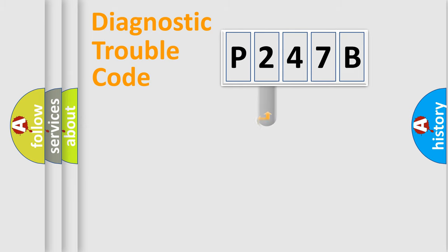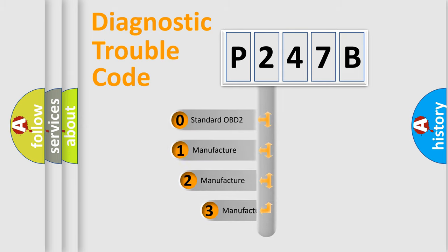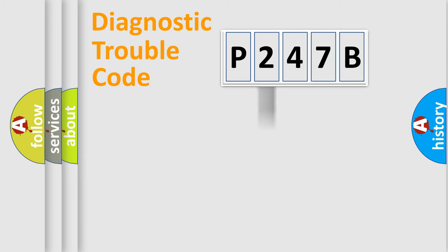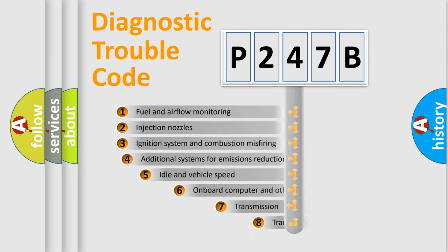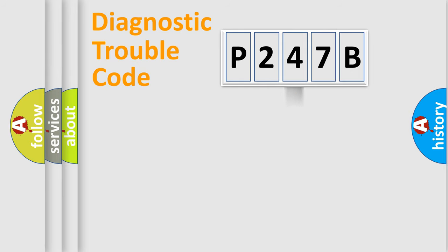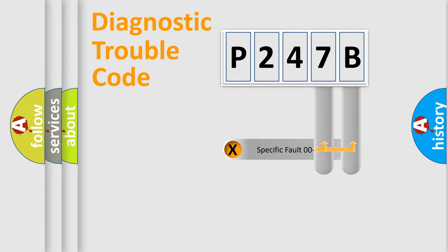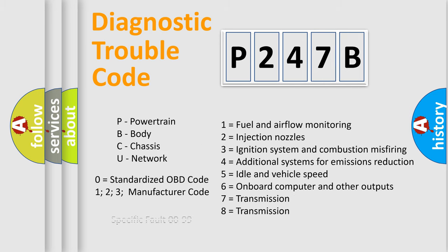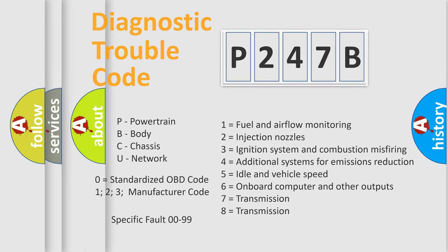This distribution is defined in the first character of the code. If the second character is zero, it is a standardized error. In the case of numbers 1, 2, or 3, it is a manufacturer-specific error expression. The third character specifies a subset of errors. This distribution is valid only for standardized DTC codes, and the last two characters define the specific fault within the group.